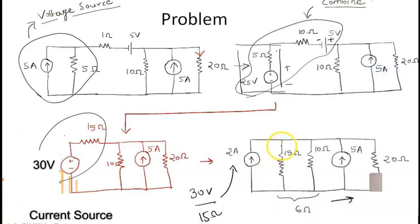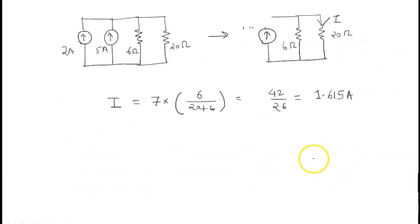Now the parallel combination of 15 ohm and 10 ohm gives us 6 ohms, and we have a current source of 2 ampere and 5 ampere. Let us combine them. We have 2 ampere and 5 ampere currents, and we have combined the parallel resistors into a 6 ohm resistor and 20 ohm resistor. We need to find out this current. Combining 2 ampere and 5 ampere, we have 7 ampere current source which is providing currents to 6 ohm resistor and 20 ohm resistor.